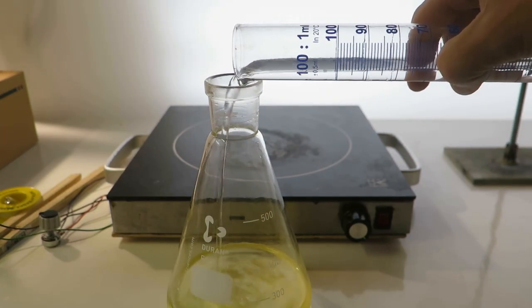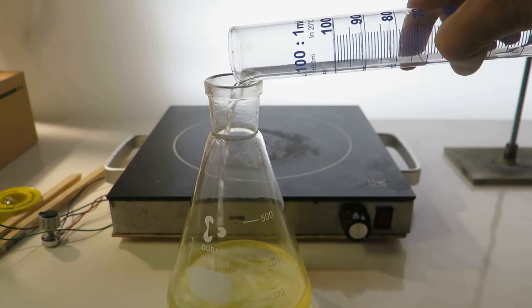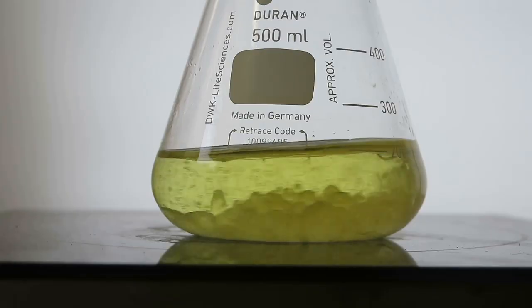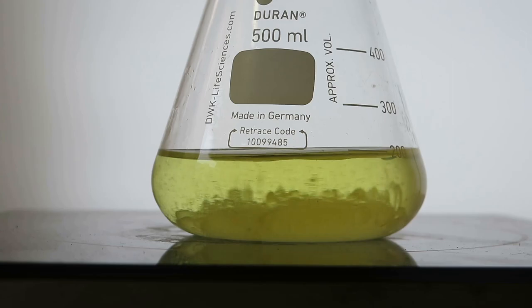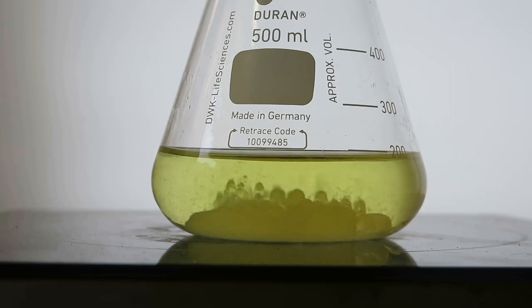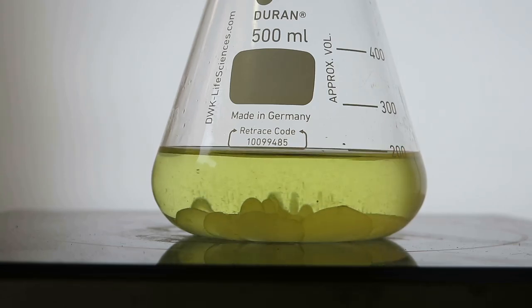And about 25 milliliters of water. Now we can see here that in the aqueous layer there's quite a bit of green color, and that's because the hydrochloric acid had some chlorine dissolved in it.